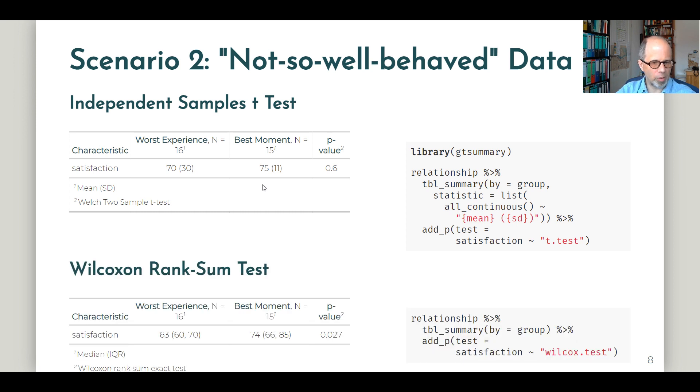Let's compare this to the Wilcoxon rank-sum test, and here we see the p-value has also changed. It's a bit higher, but it's still well below this 0.05 threshold. So according to the Wilcoxon rank-sum test, the group difference is still significant. Note that the median hasn't changed. It's still 63 as before for the worst experience group, whereas the mean is clearly higher than before. So the median is more robust towards this outlier than the mean, and the Wilcoxon rank-sum test is more robust towards this outlier than the independent samples t-test.